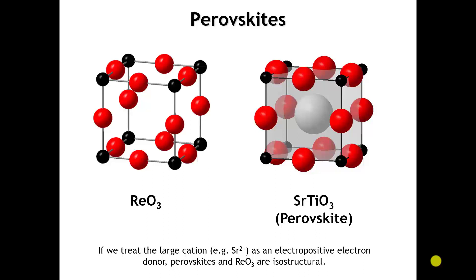The rhenium trioxide structure is very closely related to the perovskite structure, and in this view you can see that similarity. If we look at a perovskite like strontium titanate, the only difference is that we've added a large electropositive cation — here's strontium — at the middle of the unit cell in that cuboctahedral cage. That large cation is rather electropositive, so the bonds it makes with the anions are quite ionic. Taking that to the limit, we could say the strontium is just there to give up its two electrons to the titanium oxide framework. In that approximation, the band structure of a perovskite becomes completely analogous with band structures of compounds that have the rhenium trioxide structure, so we're going to treat these basically as the same.